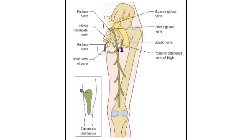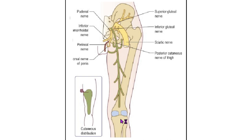The posterior cutaneous nerve of the thigh is a content of the upper half of the popliteal fossa. It pierces the deep fascia about the middle of the fossa and supplies the skin up to the middle of the back of the leg.